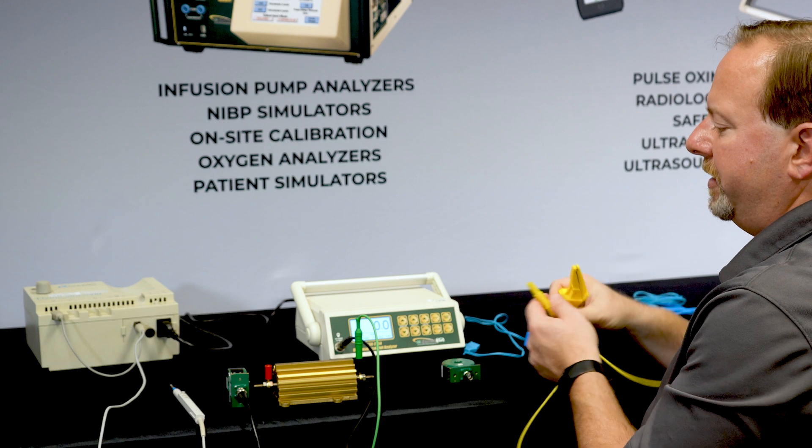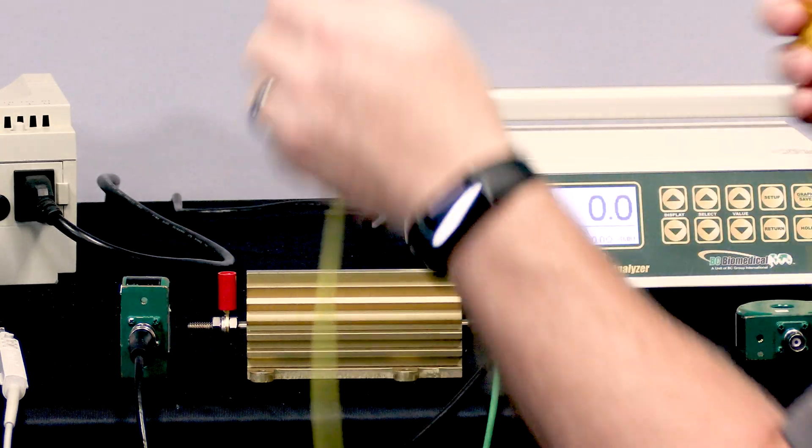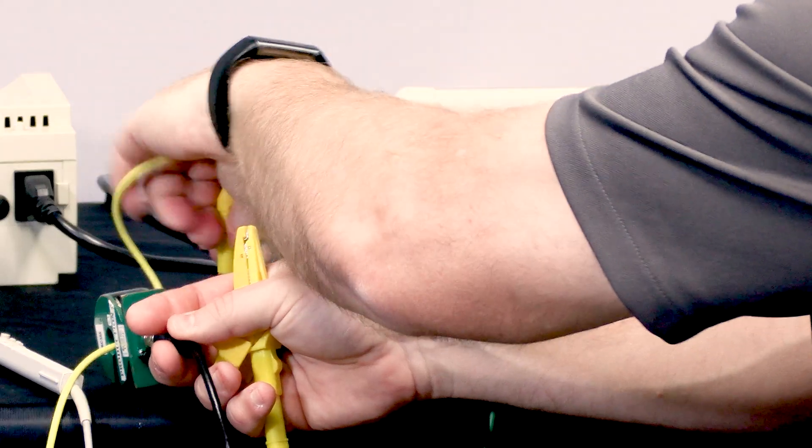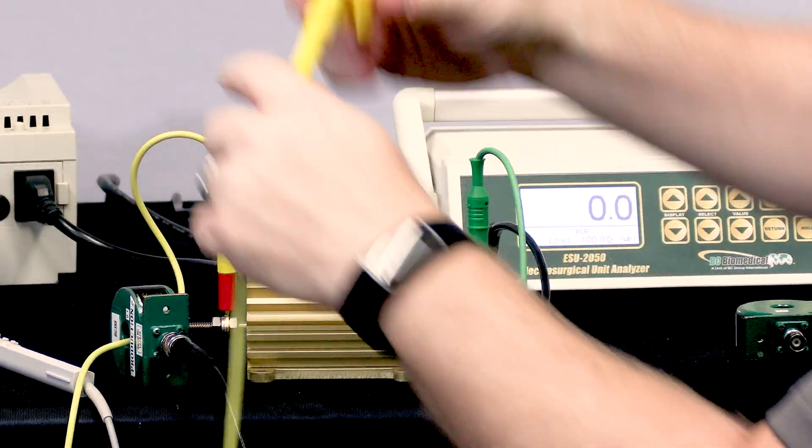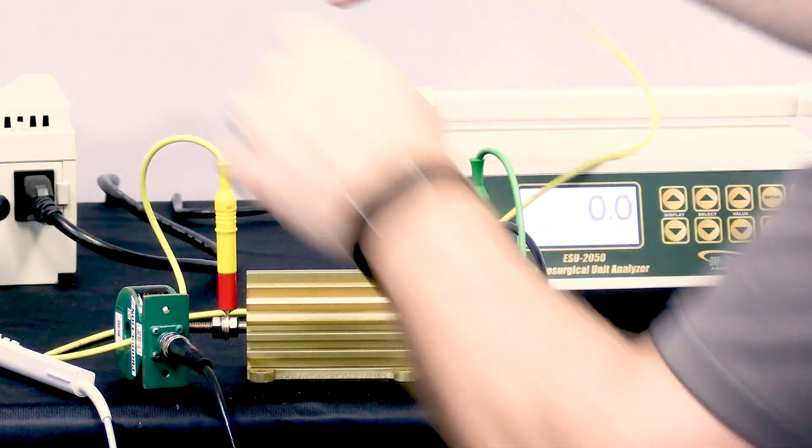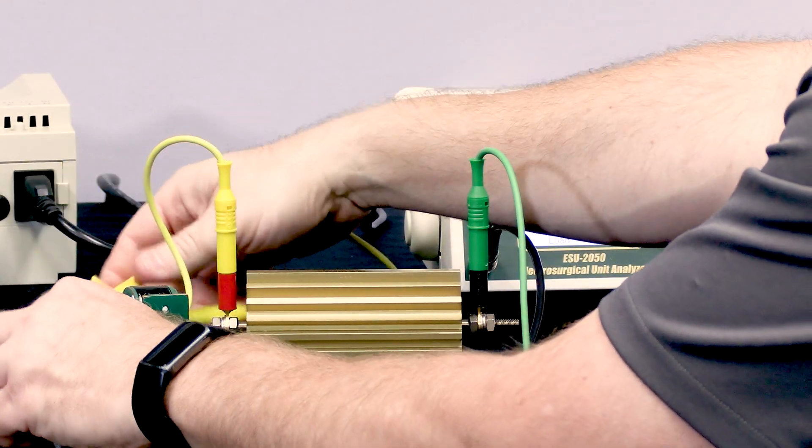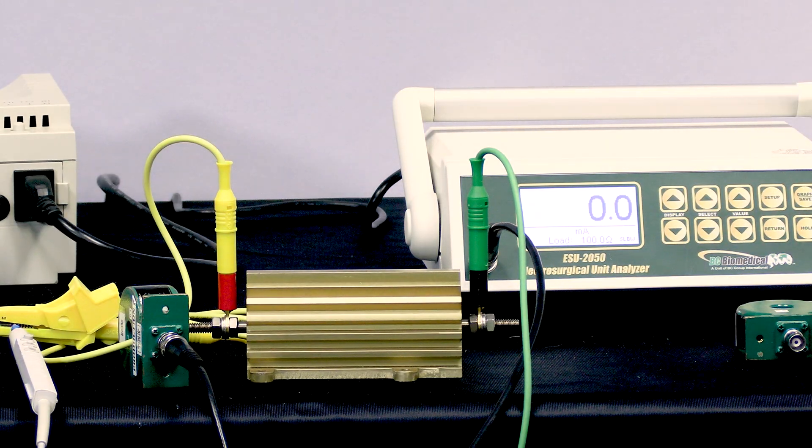The other output, the scalpel, is going to be connected to the current transformer and to the test load. The other end of that cable has an alligator clip that I'm going to connect to the scalpel electrode, and that's going to complete my circuit.